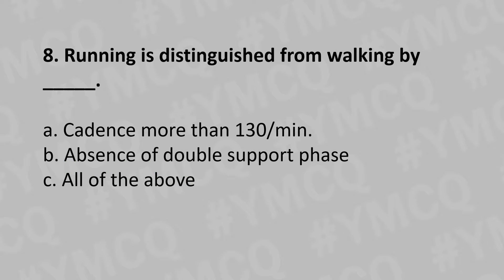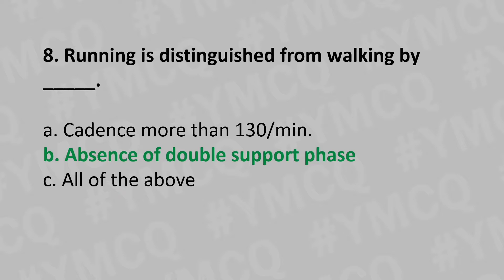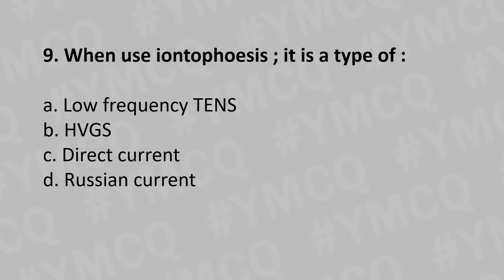Running is distinguished from walking by: Option A: Cadence more than 130 per minute, Option B: Absence of double support phase, Option C: All of the above. And the answer is Option B: Absence of double support phase. Moving to our ninth question.